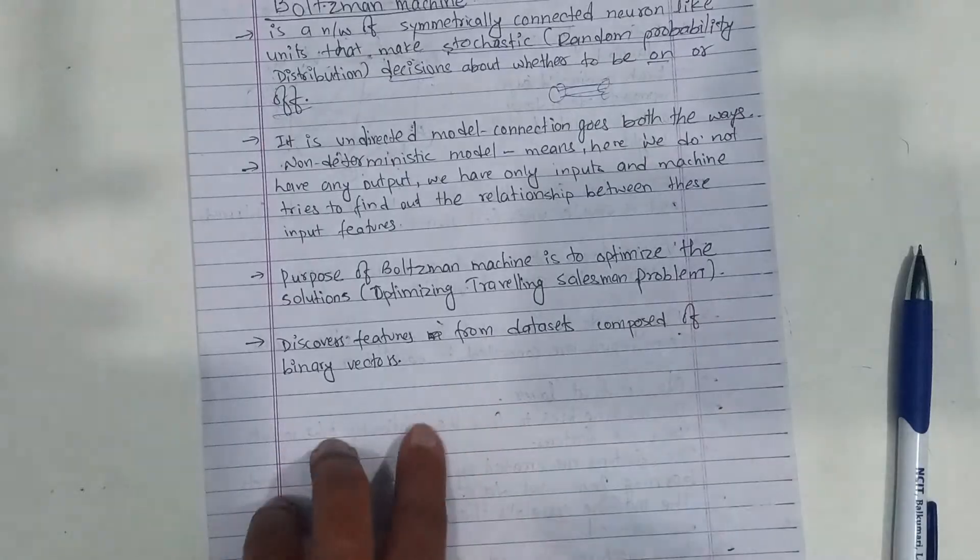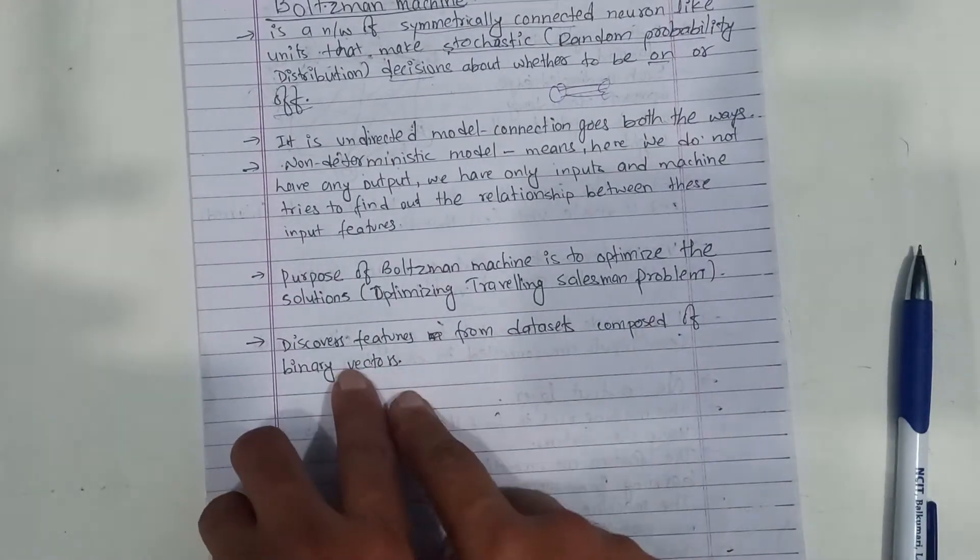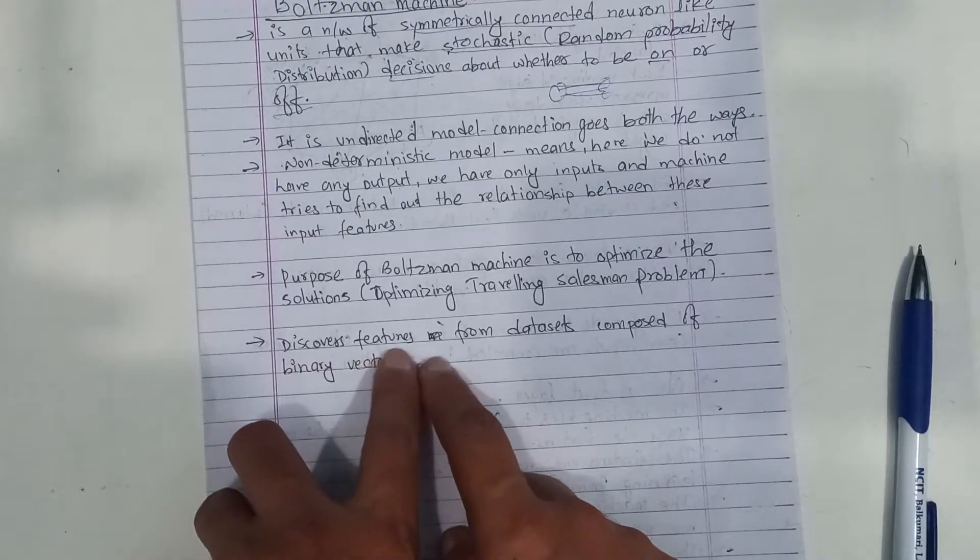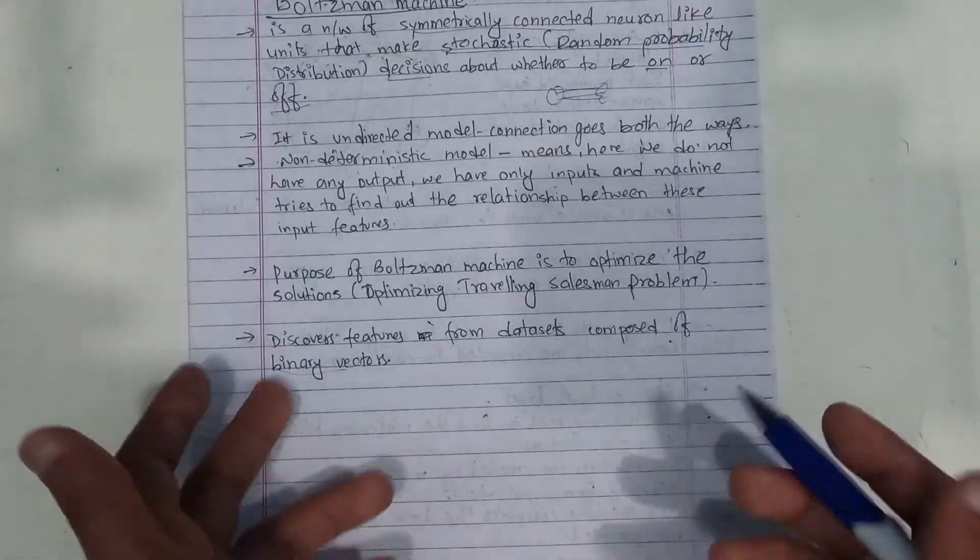Optimizing the traveling salesman problem. So discover features from data sets composed of binary vectors. Discover features from data sets. Data set is a binary vector. We have to find out the features.